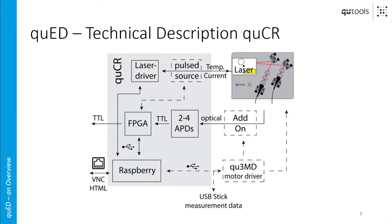Now I'm going to talk about the QCR, the control and readout unit that contains all the electronics. Of course the laser has to be controlled, so we have a laser driver in the QCR connected via cable to the small white box. We need to register detection events in two to four APDs, which are also included in the control and readout unit. These APD signals are then relayed to an FPGA which contains the coincidence logic and also communicates with a Raspberry computer on which the user interface is programmed.